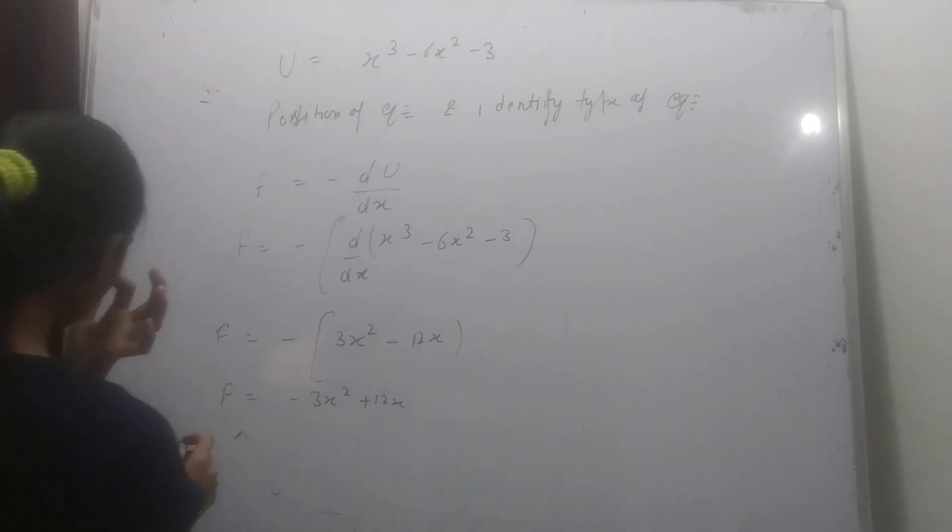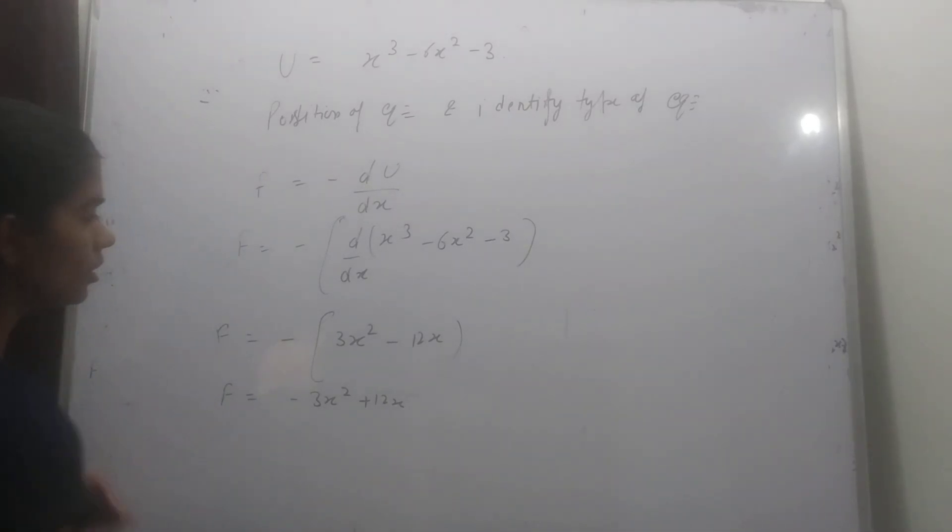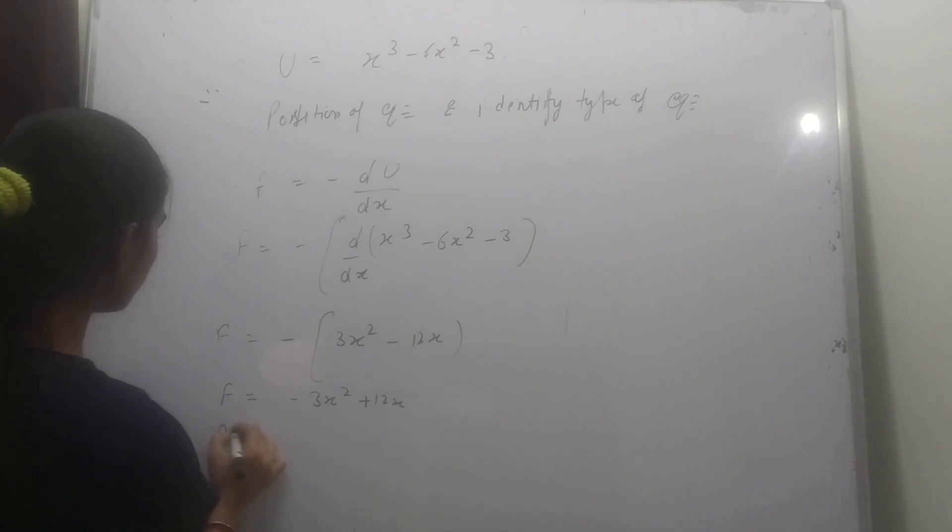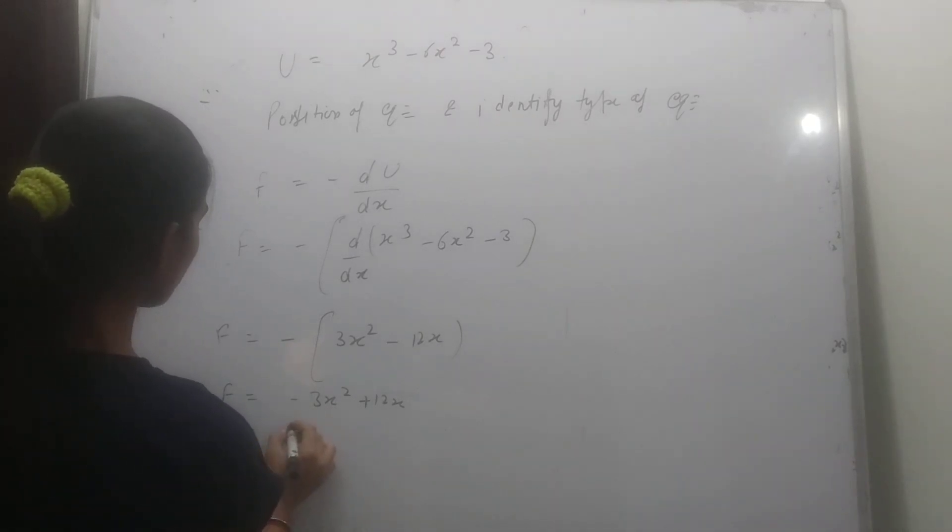F equal to 0 for stable and unstable equilibrium. 0 equal to minus 3x square plus 12x.